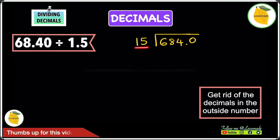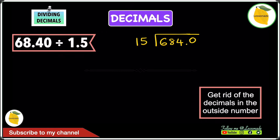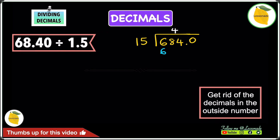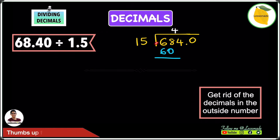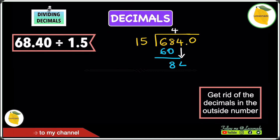Let's start dividing. Does 15 go into 6? No, it does not. Does 15 go into 68? Yes — it goes 4 times because 15 times 4 is 60. Write 60 down. 68 minus 60 gives 8. Now bring the 4 down and write it next to the 8 to give 84.